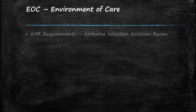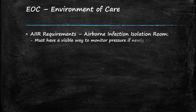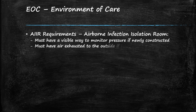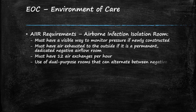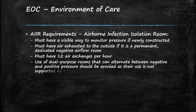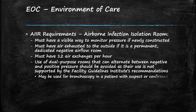AIIR requirements, or airborne infection isolation room requirements: you must have a visible way to monitor pressure if it's a newly constructed room. Air must be exhausted to the outside if it is a permanent dedicated negative airflow room. You must have 12 air exchanges per hour. The use of dual-purpose rooms that can alternate between negative and positive pressure should be avoided, as their use is not supported by the FGI, or Facility Guideline Institute, recommendations. They may be used for bronchoscopy in a patient with suspected or confirmed TB.